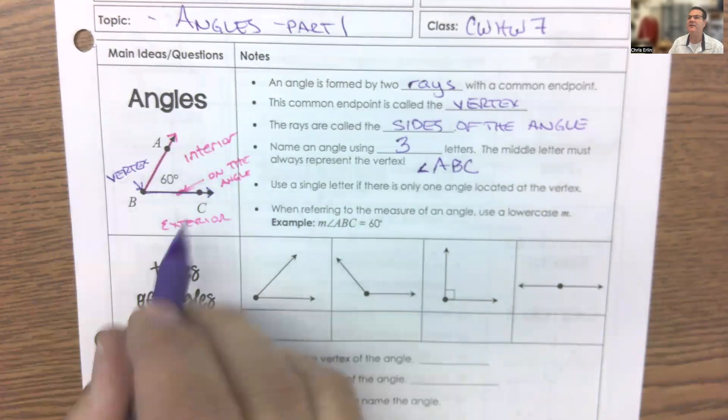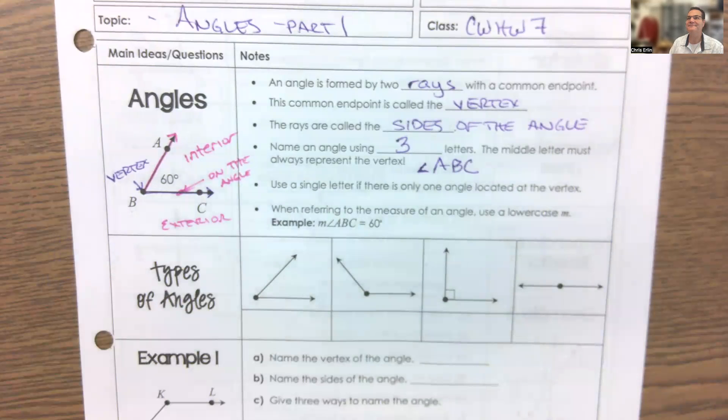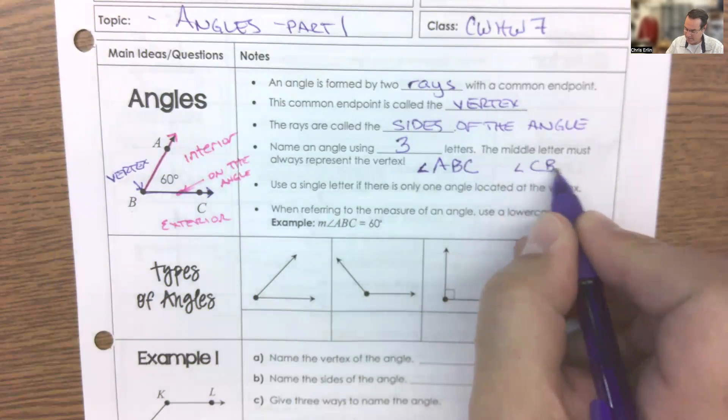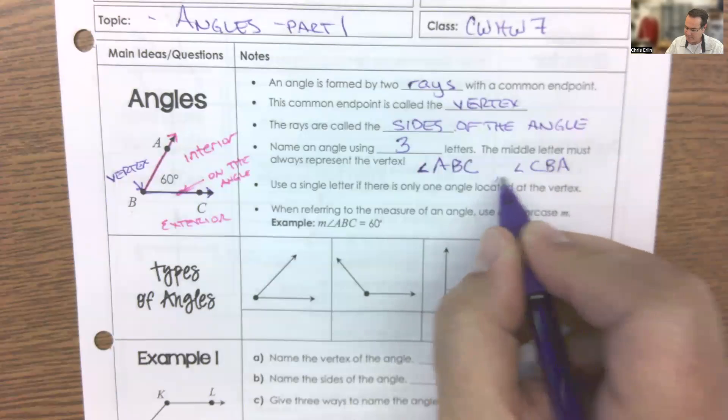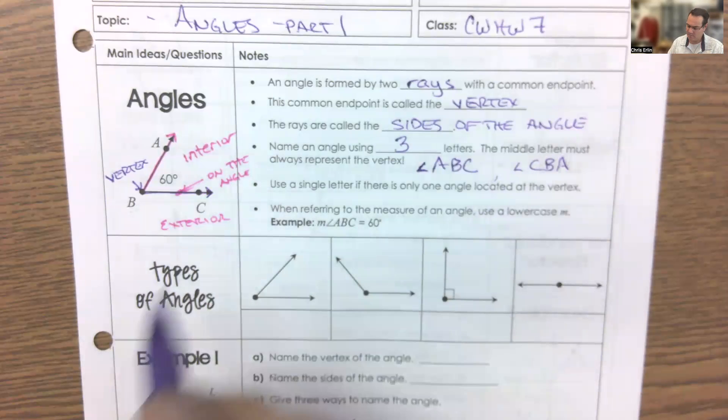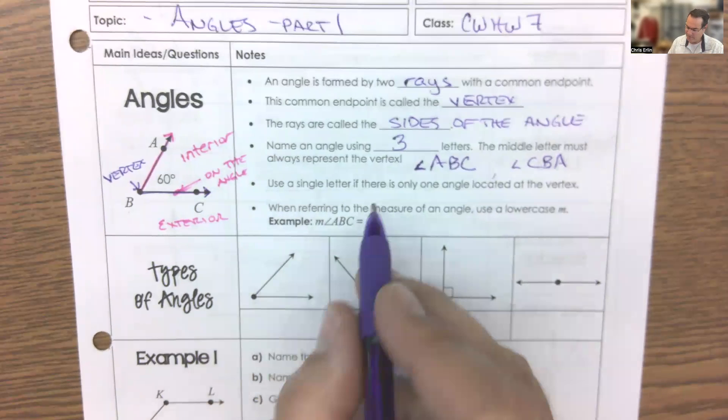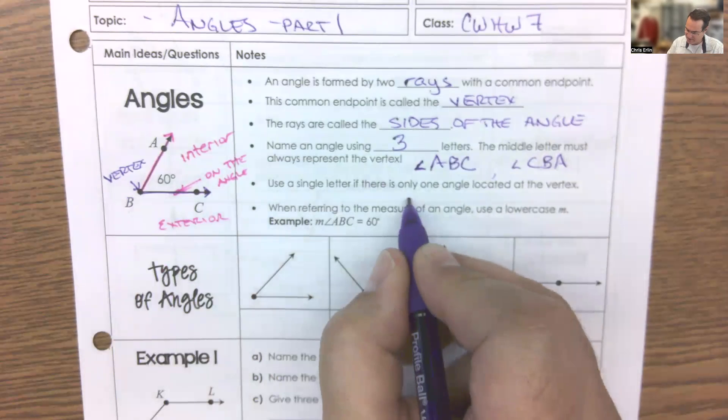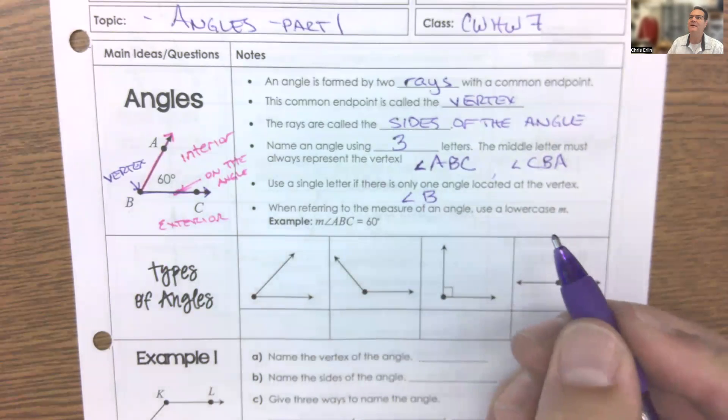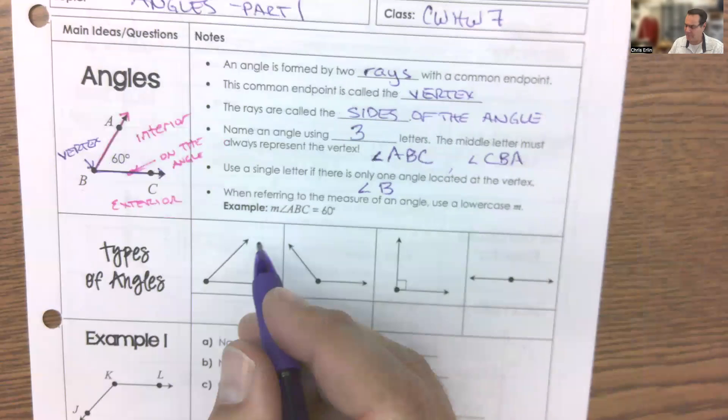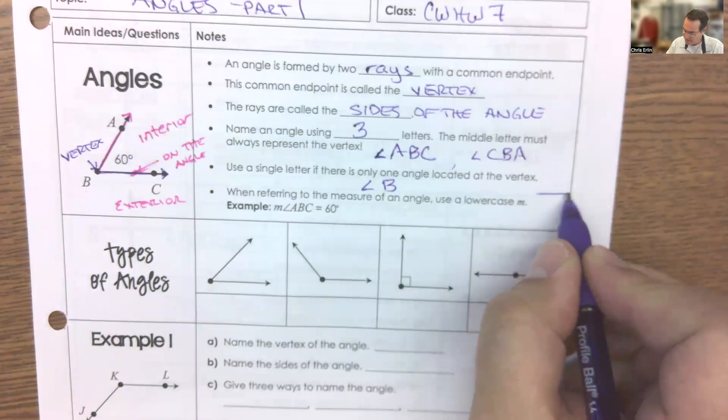Is there a second way I could name this angle using three letters? Angle C, B, A, because B is still in the middle. And I'm using points from either of the sides of the angle. There are occasions when we get to use a single letter, and this is one of those occasions. I could actually call this angle B, just the vertex, because it's clear enough. There isn't a controversy over whether we're talking about one angle or another.